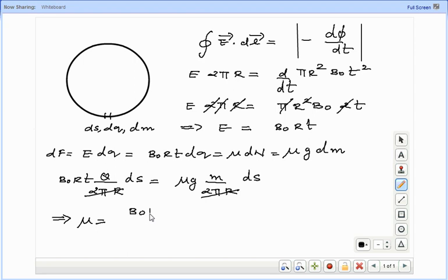We have mu equal to B naught R T Q divided by M G.